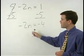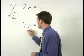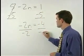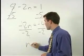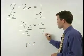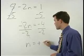Now to get n by itself, we just divide both sides of the equation by negative 2. Negative 2s cancel and so we have n equals negative 4 divided by negative 2 which is positive 2.